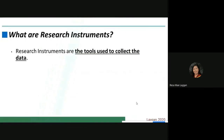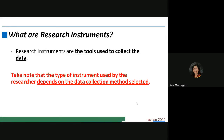So what are research instruments? Research instruments are the tools that are being used to collect the data. The type of instruments used by the researcher depends on the data collection method selected. For example, if you are going to use primary data collection, then you need to develop and create a research instrument. But if you are going to use secondary data, maybe you will use records as your research instrument.